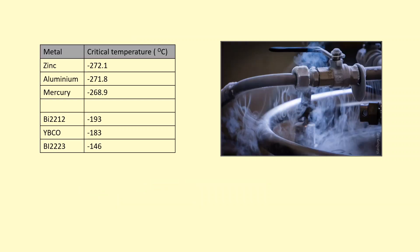This table shows the typical critical temperatures of different materials. As you can see here, they're extremely low, minus 270 degrees Celsius, for example. To get to this temperature, you need to use very cold substances, for example, liquid helium for the top three here.